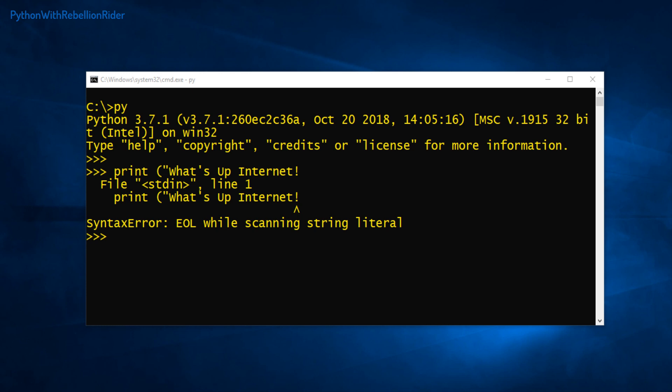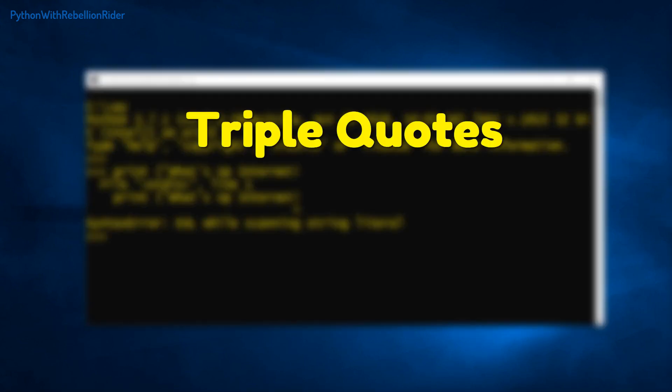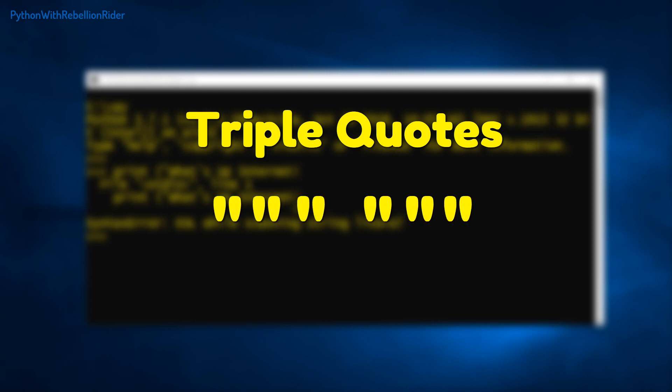Actually, Python programming provides us a very simple way to deal with multi-line strings. To print a multi-line string in Python we use triple quotes — a set of quotation marks enclosed within each other. These quotation marks could either be double quotes or single quotes. Let's learn how to use triple quotes to print the multi-line string in Python.